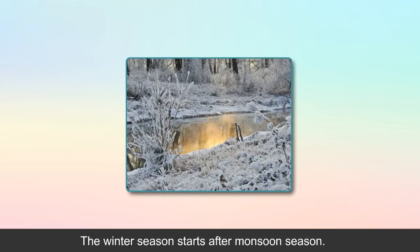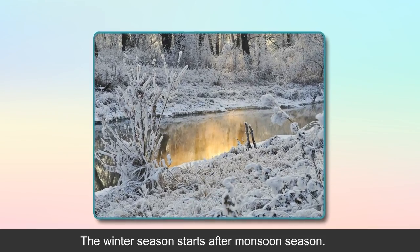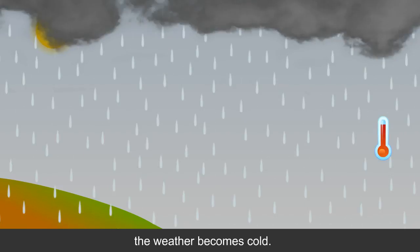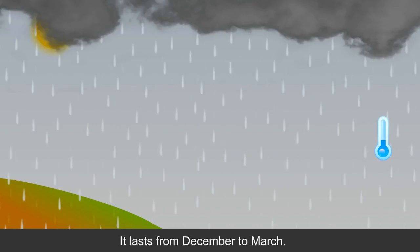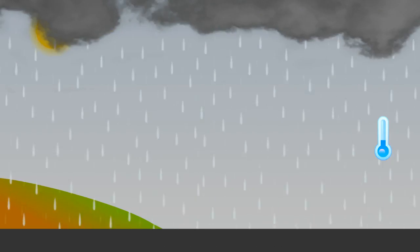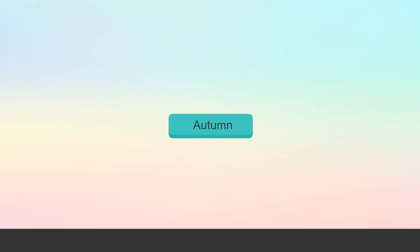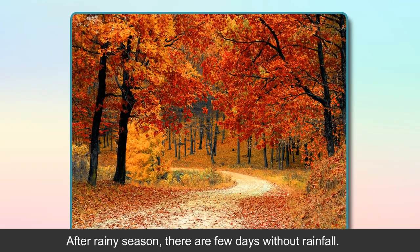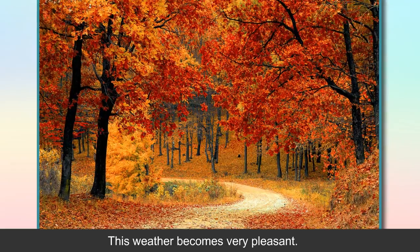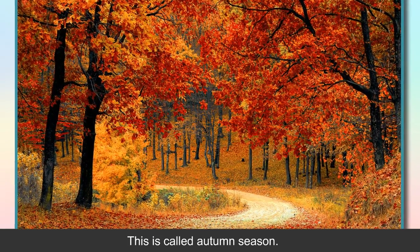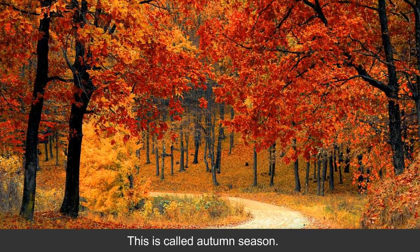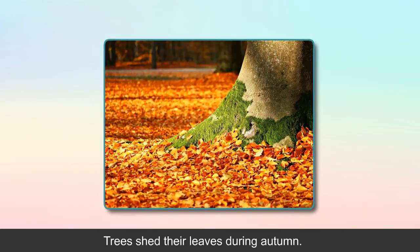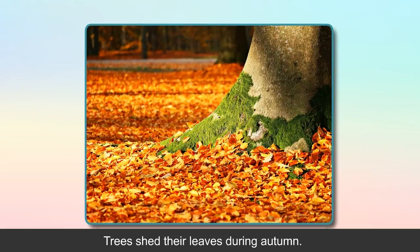Winter: The winter season starts after monsoon season. Due to heavy rainfall, the weather becomes cold. It lasts from December to March. Autumn: After the rainy season, there are a few days without rainfall. This weather becomes very pleasant and is called the autumn season. It starts in October and lasts till November. Trees shed their leaves during autumn.